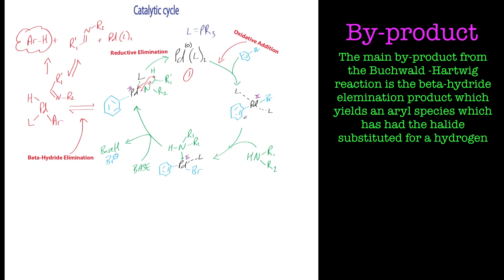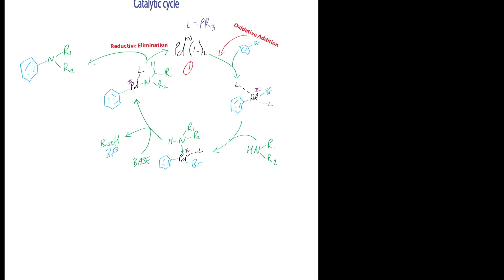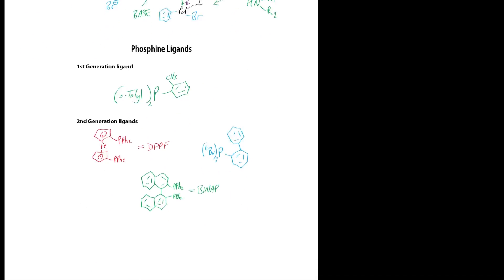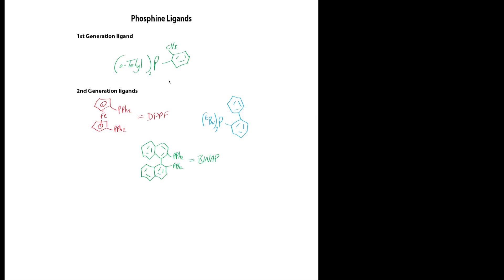So we want to try and avoid that. The reason Hartwig and Buchwald have got all the credit for this is simply because they've really worked hard on understanding what causes the elimination and what drives this forward. This is what we want, the amine there. But as I've drawn it, it's the secondary amine. What's important to make a primary amine or a secondary amine and also reduce the amount of beta-hydride elimination comes down in the end to the phosphine ligands.